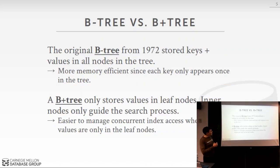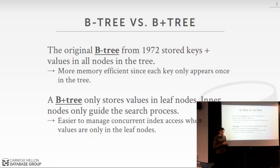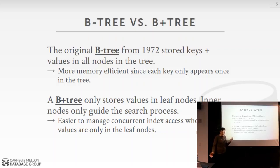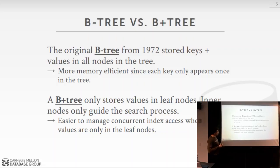We won't cover B-tree or B+ tree basics here — that should be covered in an intro class. One clarification: a B-tree and a B+ tree are two distinct data structures. Postgres documentation refers to B-trees but almost certainly means B+ trees. The original self-balancing B-tree from 1972 stored keys and values in any node, meaning you could find a value partway down the tree.